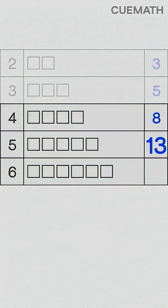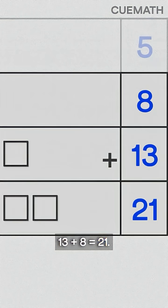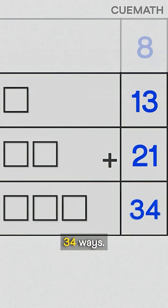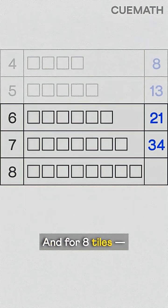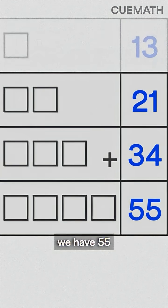For six tiles, thirteen plus eight equals twenty-one. For seven tiles, thirty-four ways. And for eight tiles, we have fifty-five total ways.